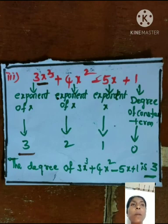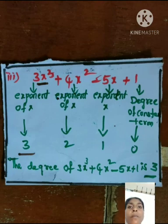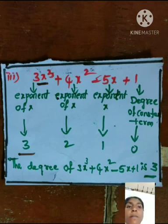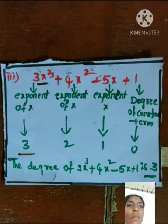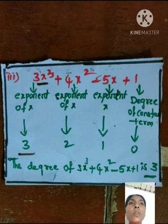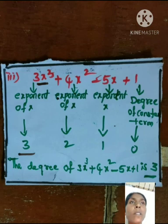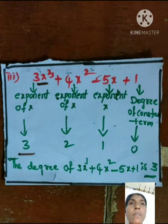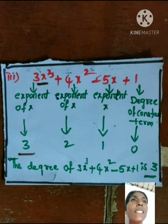Solving the third problem: 3x³ + 4x² − 5x + 1. This is an algebraic expression with more than three unlike terms, so it is a multinomial. The degree of 3x³ + 4x² − 5x + 1 is 3, since the highest exponent is 3.